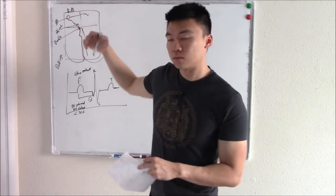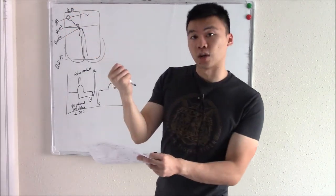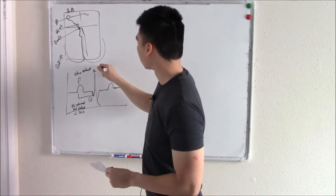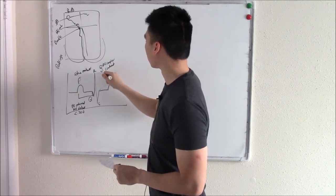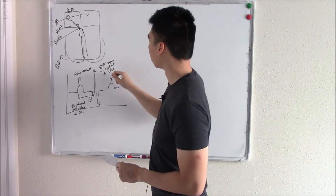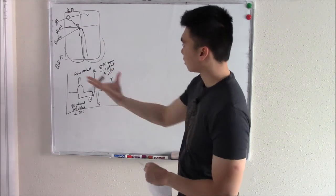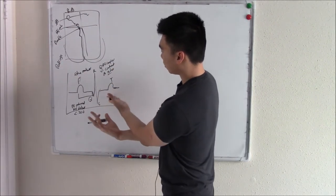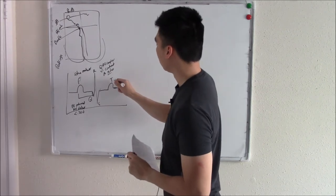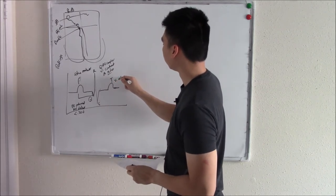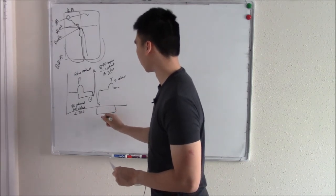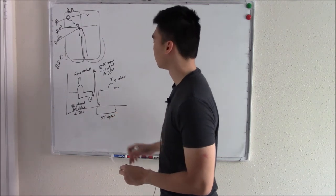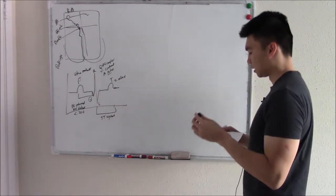Once it gets past the AV node, it sends the signal down and causes your ventricles to contract. That's measured via the QRS complex — ventricular contraction. Your atria will also relax and repolarize at this time. Then your ventricles relax, and that's your T wave.